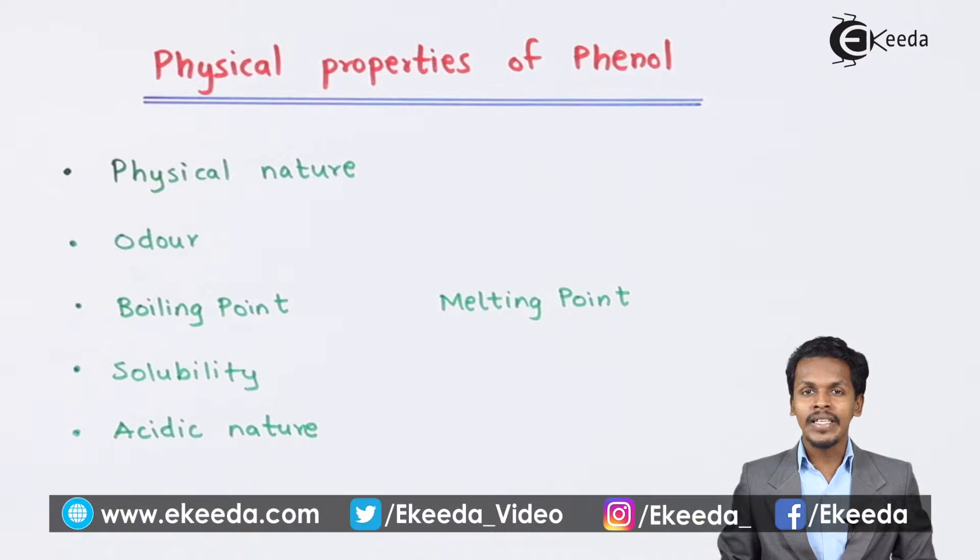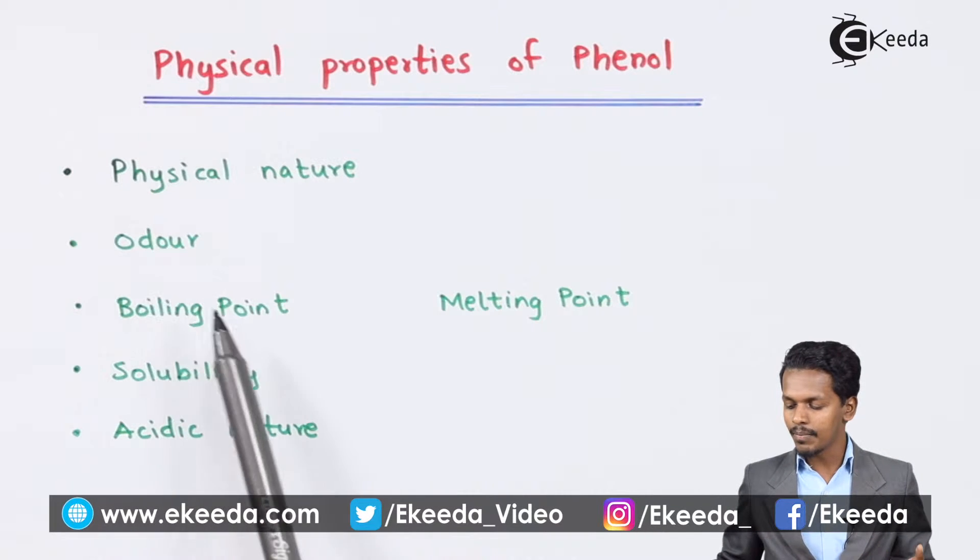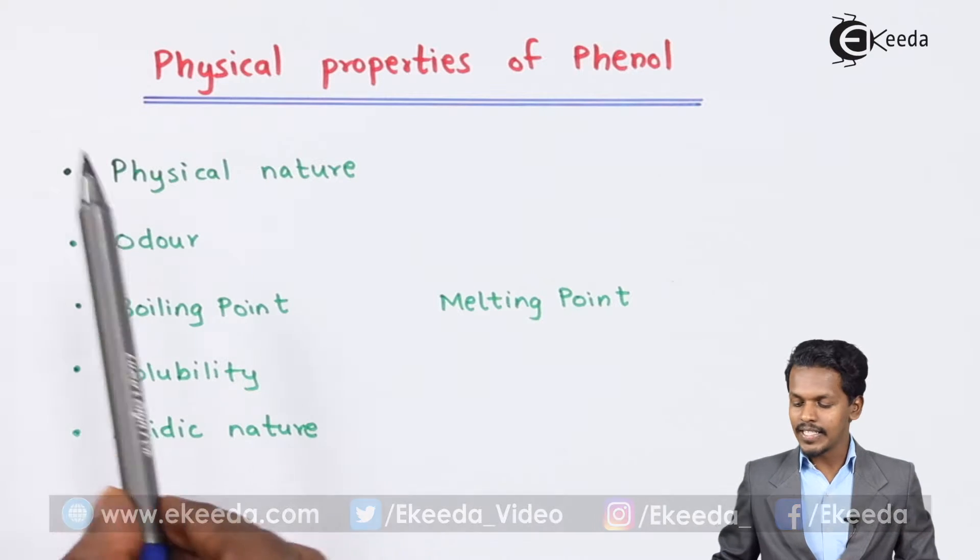So talking about the physical properties we have certain points and those are physical nature, odor, boiling point, melting point, solubility and acidic nature. So starting with the first one that is physical nature.